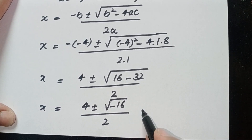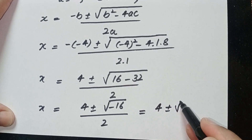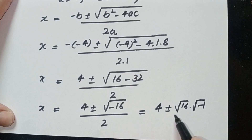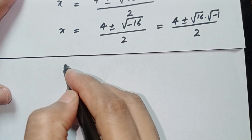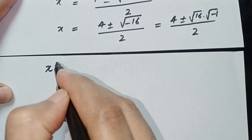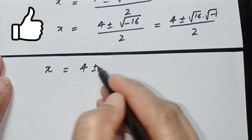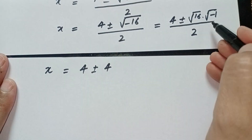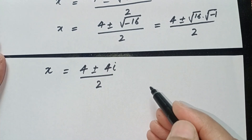We can write minus 16 as 16 times minus 1, separating the minus from the 16. So in the next step, x is equal to 4 plus or minus: the square root of 16 is 4, and the square root of minus 1 is i, giving 4 plus or minus 4i, all over 2.